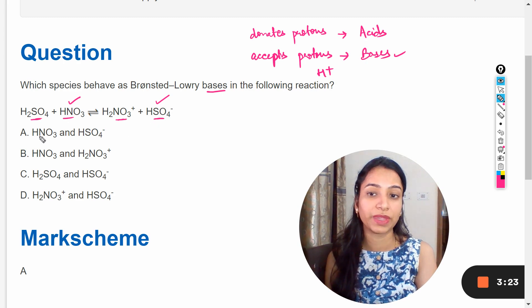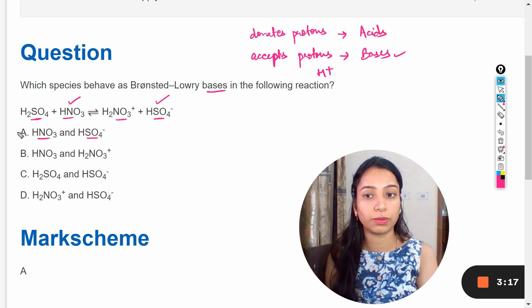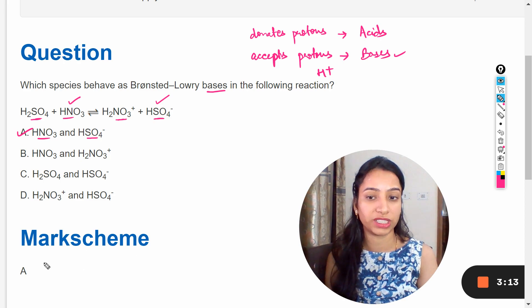So in this whole reaction HNO3 and HSO4 negative are the Brønsted-Lowry bases. So answer should be option A and you can see here the markscheme also shows that option A is right.